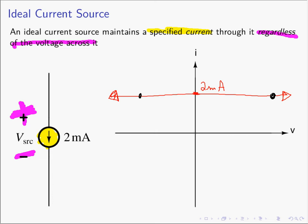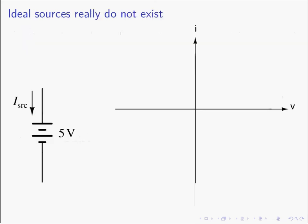Everything we've been learning are idealized cases — ideal elements that really don't exist in real life. Here on the left is another representation of a voltage source — you'll see this one quite a bit. It's exactly equivalent to the previous form. The long line is the plus polarity marking and the short line is the minus polarity marking. We use this representation typically when talking about constant or DC voltage sources or batteries, but they are truly interchangeable.